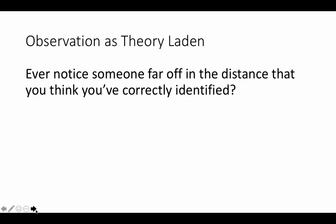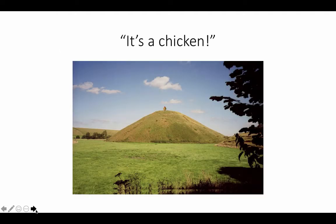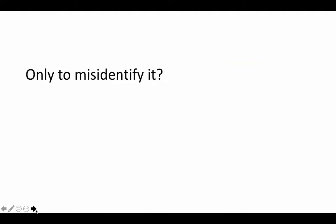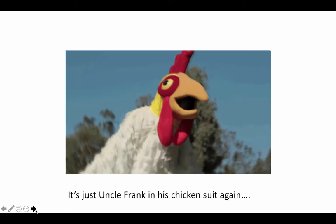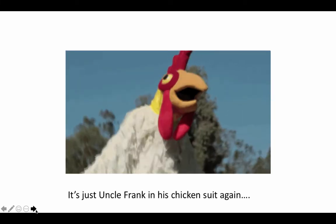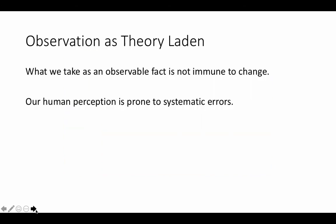Think about this. Ever notice someone far off in the distance that you think you've correctly identified? You might think you see a chicken on top of a hill, but when you get closer, you find out you misidentified it — in this case, it's my Uncle Frank in his chicken costume again. So what we take as an observable fact is not immune to change. In fact, our human perception is prone to systematic errors.